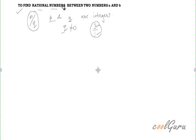Now coming to this point, we have to find rational numbers between any two numbers A and B. The simple formula for this is A plus B by 2. This number will be less than B and greater than A, it will be between A and B.